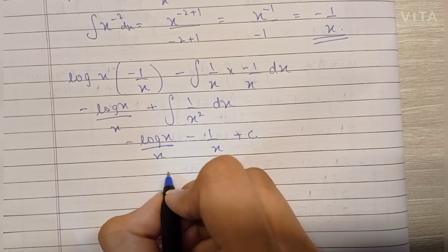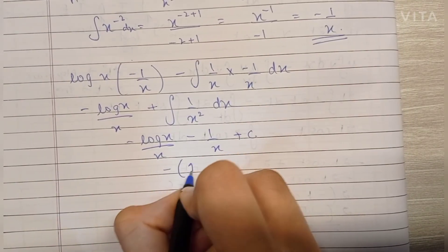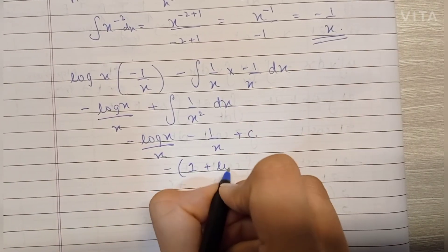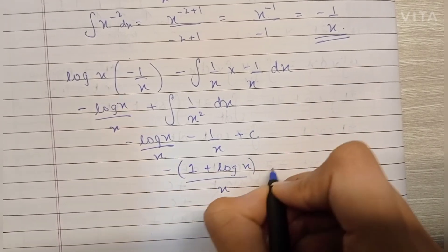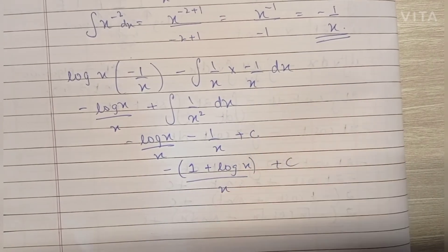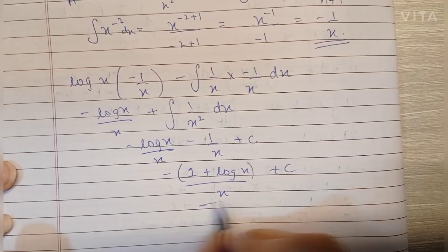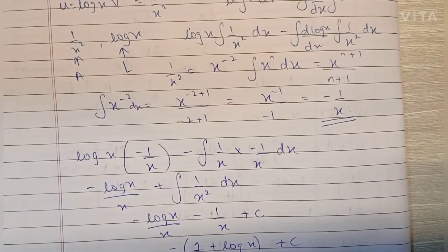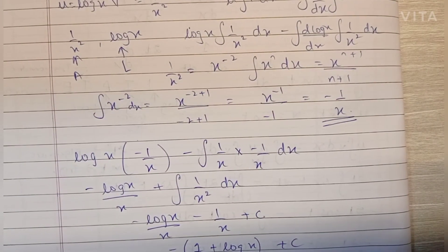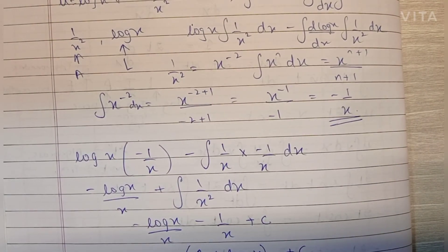So this becomes minus log(x)/x minus 1/x plus C. Combining this, the final answer is minus (1 + log(x))/x + C. And that's it for today guys — thank you so much for watching, I'll see you in the next video. Bye!